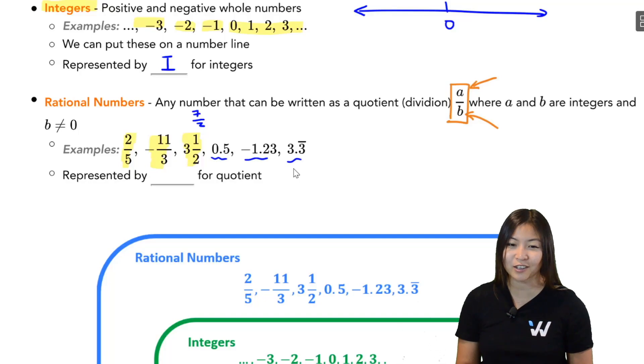Now you might be thinking, how about these decimals? These are not fractions. Well, I can write them as fractions, right? 0.5 is one half. Negative 1.23 is negative 123 over 100. We're going to go over how to convert in a second. And 3.3 repeating is just 3 and 1 third. So these are all rational numbers.